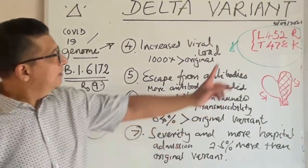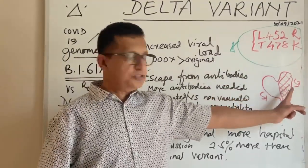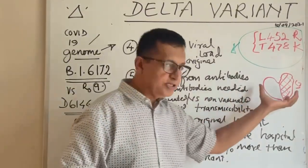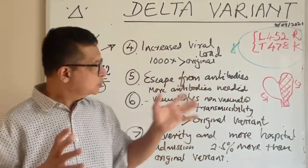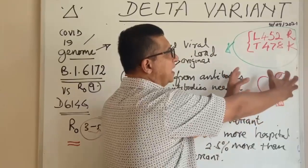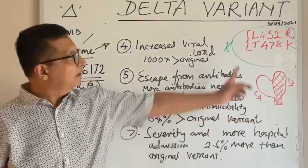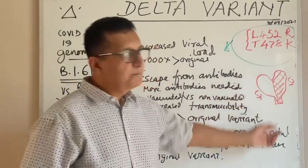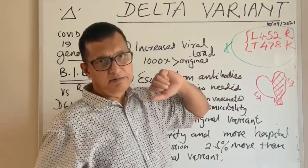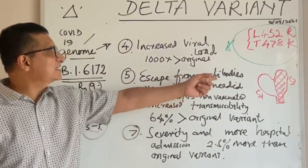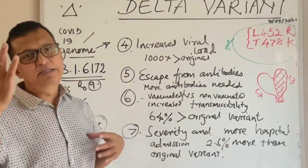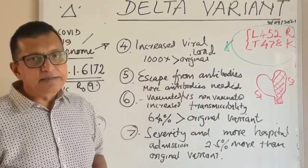The fifth reason is that when this type of mutation happens in the spike protein, the originally designed antibodies against the original COVID spike protein get confused identifying the delta variant's spike protein. They need more and more antibodies to control it — there is escape from antibodies, or higher antibody concentrations are needed to control the delta variant.